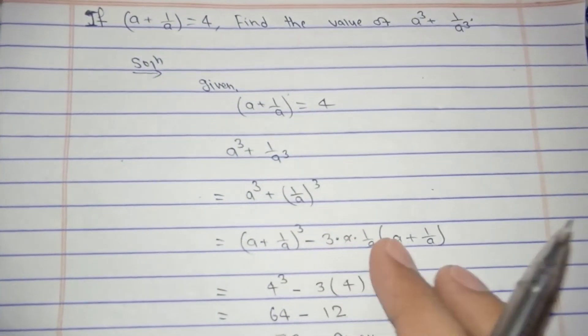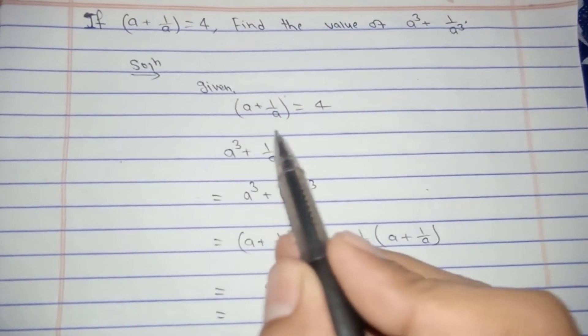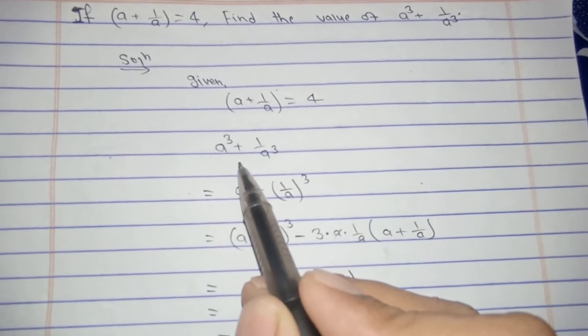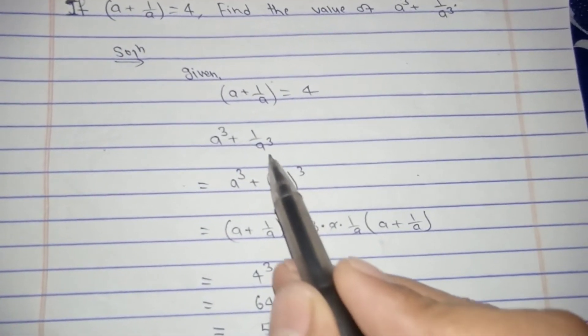But we can do it in an easier way by using this formula like this. Here is given a plus one by a equals to four, and we have to find the value of a cube plus one by a cube.